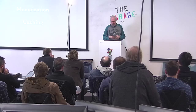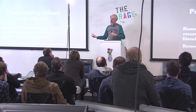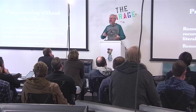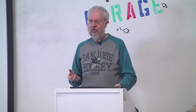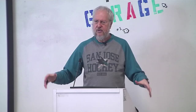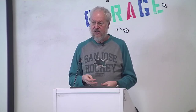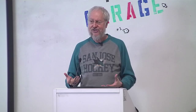We can take any ordinary programming language and turn it into a purely functional programming language by deleting stuff. We can remove everything that could have side effects: remove the assignment statement, replace loops with recursion, freeze all array and object literals so they can't be modified. In JavaScript that means removing Date — because every time you call Date it returns a different value, which is mathematically absurd. Same with random. But if we remove all those things, we'll find we can't get anything done anymore, because most programs interact with the world, and the world is constantly changing.